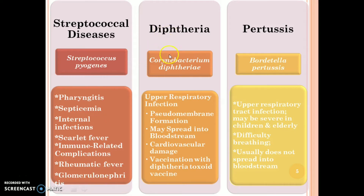Diphtheria is caused by Corynebacterium diphtheriae. The symptoms are upper respiratory tract infection. Pseudomembrane formation may spread into the bloodstream, leading to cardiovascular damage. Vaccination with the diphtheria toxoid vaccine may prevent humans from Corynebacterium diphtheriae.